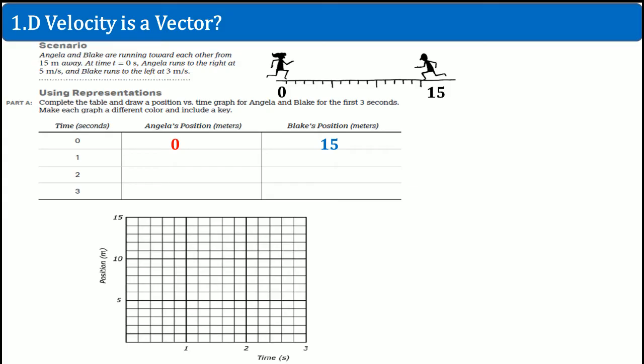Now, at first second, where is Angelica's position? Well, it should be 5 because she's running at 5 meters per second. So zero plus 5 is 5. Where's Blake's position? Blake is running to the left at 3, so he's subtracting 3. So his position is going to be at 12 because he's getting closer to Angelica.